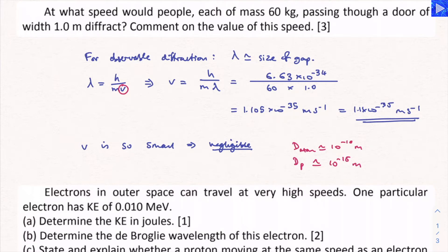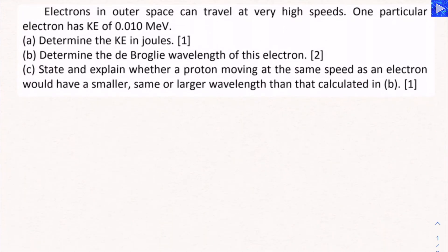Right, let's move on to the next question. Electrons in outer space can travel at very high speeds. One particular electron has kinetic energy of 0.010 mega electron volts. We've got three parts to this question.